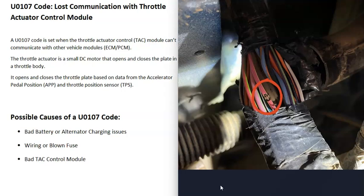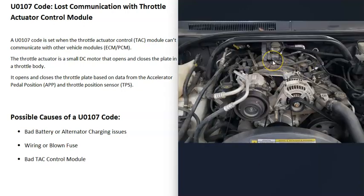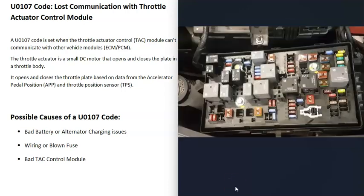The next thing that could cause this is a wiring issue or a blown fuse going to that throttle actuator control module. This includes the wires running down to the pedal, up underneath the dashboard, and from there up to the control module. It can also be the wires running up to the throttle body, like the throttle position sensor, or the wires running back to the engine control module or powertrain control module. Keep in mind that a blown fuse often indicates a wiring problem as well.